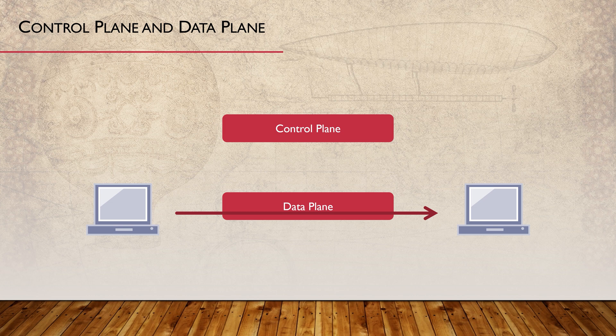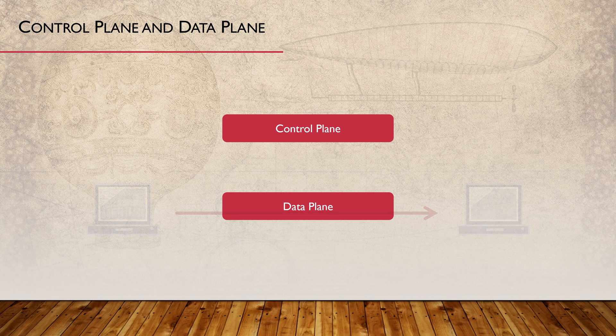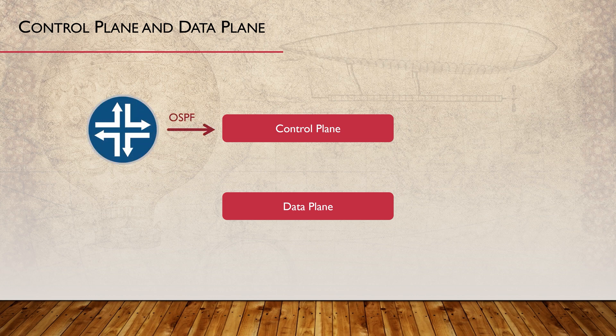When traffic comes into a switch, for example, it likely needs to be forwarded out to another location. This is called transit traffic, as it is transiting through the switch. This traffic is passing through the data plane. But while devices spend a lot of their time forwarding transit traffic, that's not all they do. Routers deal with routing protocol traffic. Switches respond to ARP requests.